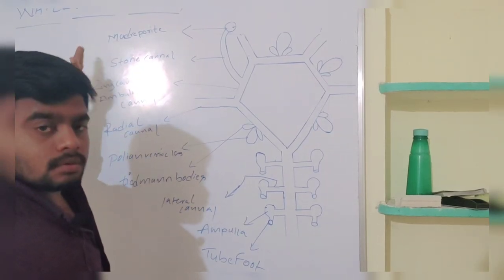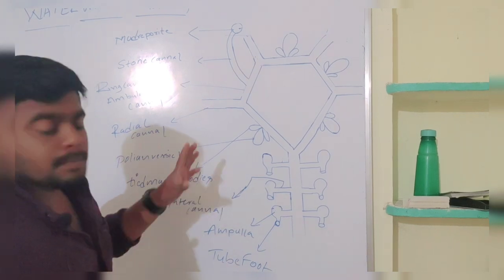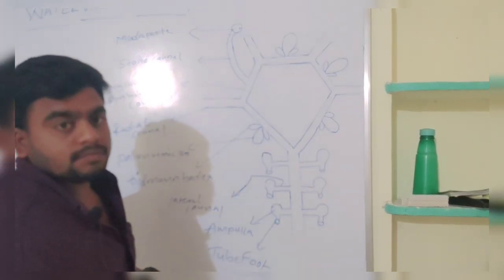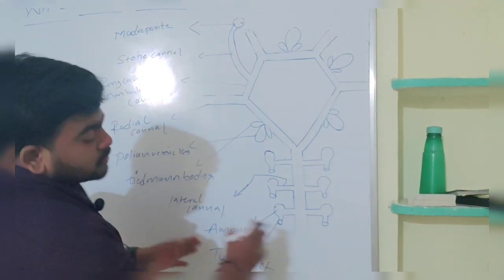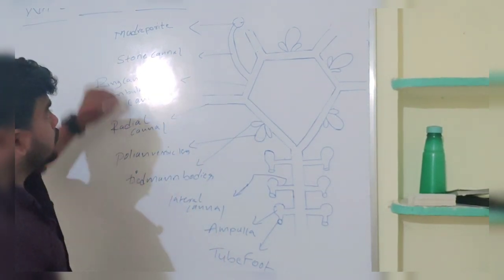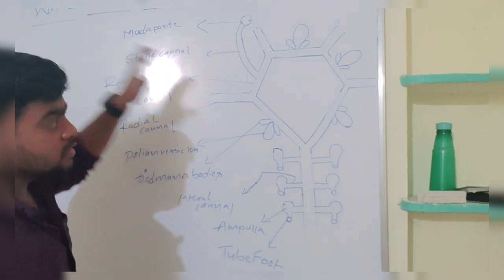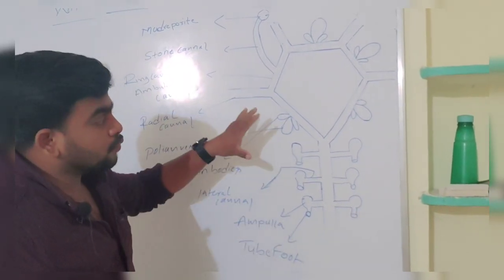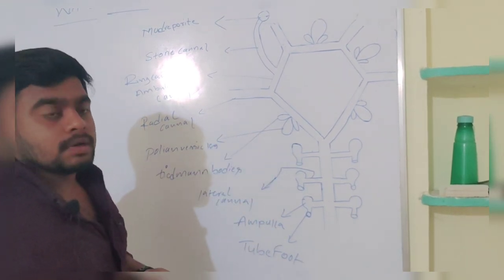Let us go in deep with this water vascular system. For our better understanding, I have drawn a diagram of the water vascular system in starfish. Here we can see the water vascular system, mainly found in echinoderms. How does this water vascular system help for locomotion in starfish? Let us go in deep.